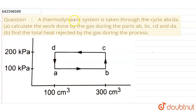Our question is: a thermodynamic system is taken through the cycle ABCDA. Calculate the work done by the gas during parts AB, BC, CD, and DA. Also find the total heat rejected by the gas during the process.